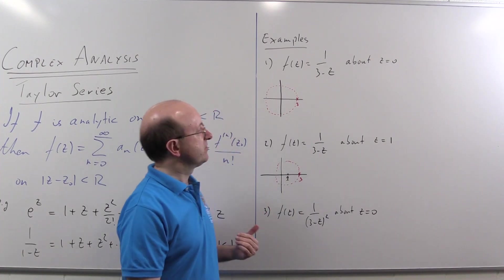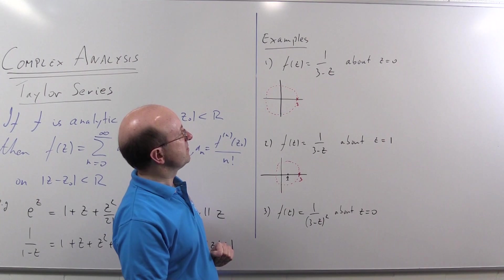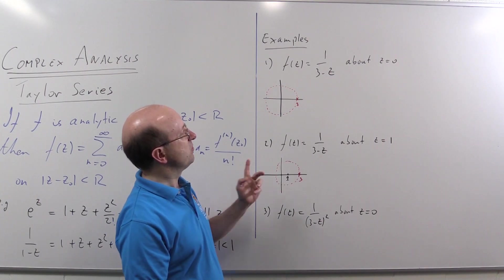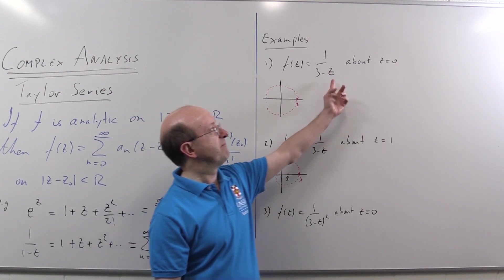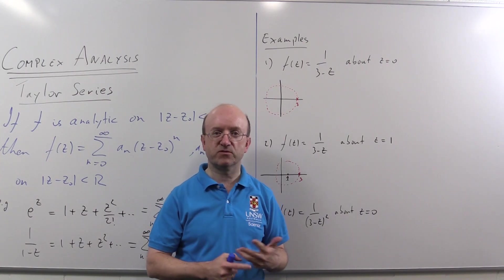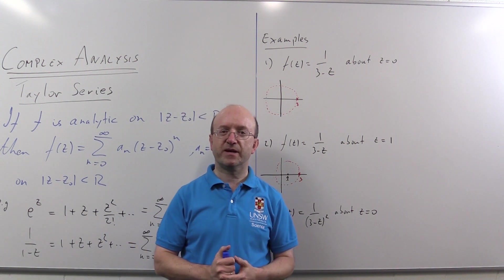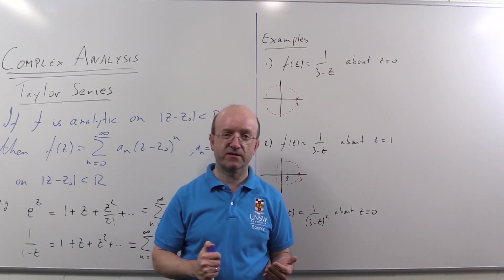So here I'm just going to do three examples. My first one is the power series for one over z minus three about z equals zero, which is another way of saying in powers of z minus zero or just in powers of z. A Taylor series in powers of z is usually referred to as a Maclaurin series.